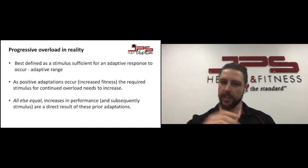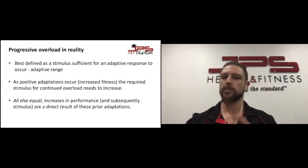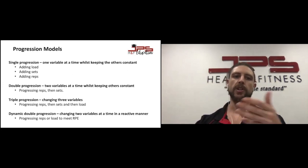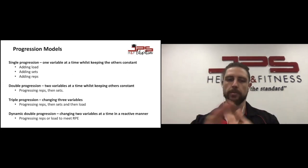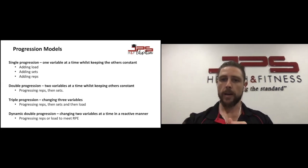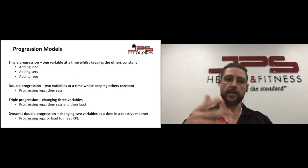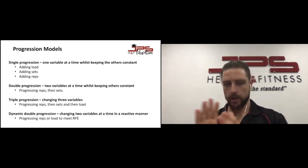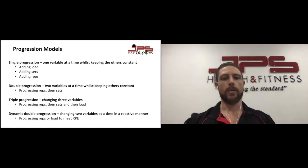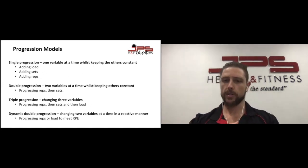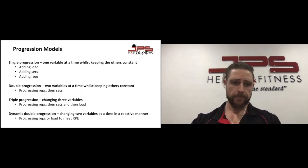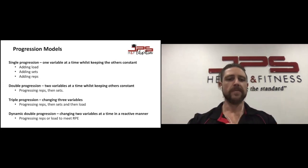We have a number of different progression models we can use within training programs. Single progression is where we change one variable while keeping others constant — adding load, sets, or reps. Double progression, which the program design section covers more, is where we change two variables at a time while keeping others constant — for example, progressing reps first, then load.